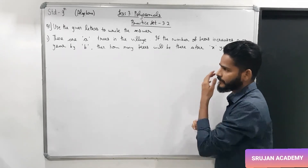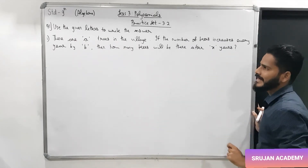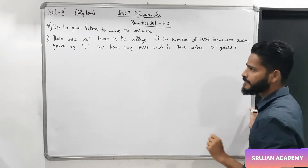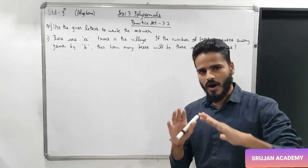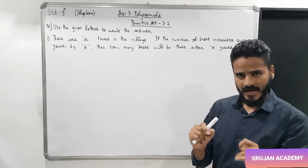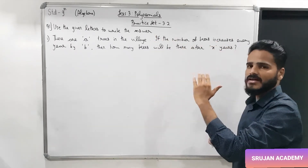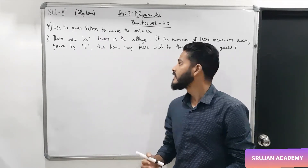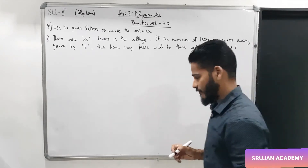First, there is a question about word problems. Question 1: use the given letters to write the answers. There are 'a' trees in a village at present. The number of trees increases every year by b. How many trees will there be after x number of years?